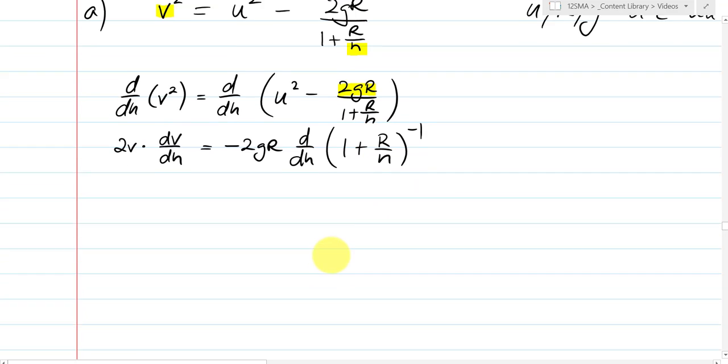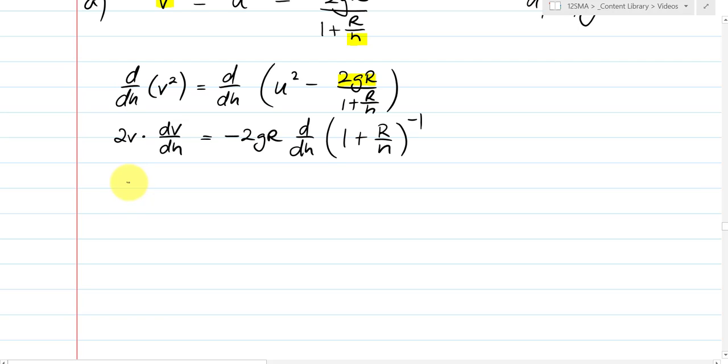And this is now a chain rule problem. So over here I've still got 2vdvdh. And that's equal to negative 2gr times by negative 1 times 1 plus r over h to the power of negative 2, times by ddh of the inside function 1 plus r over h.